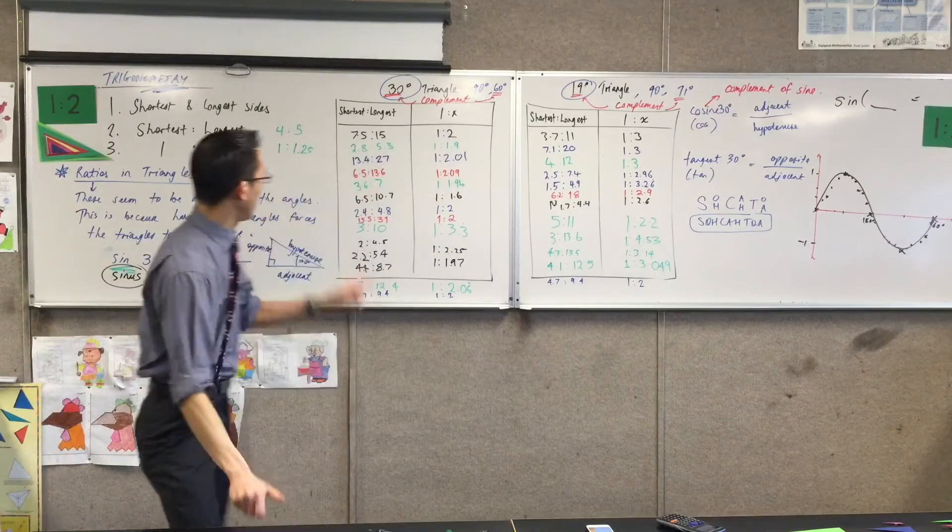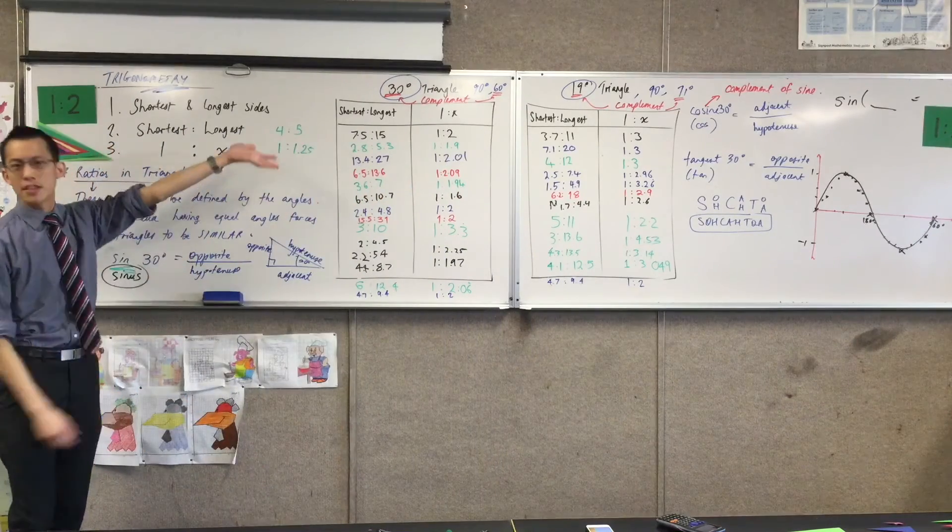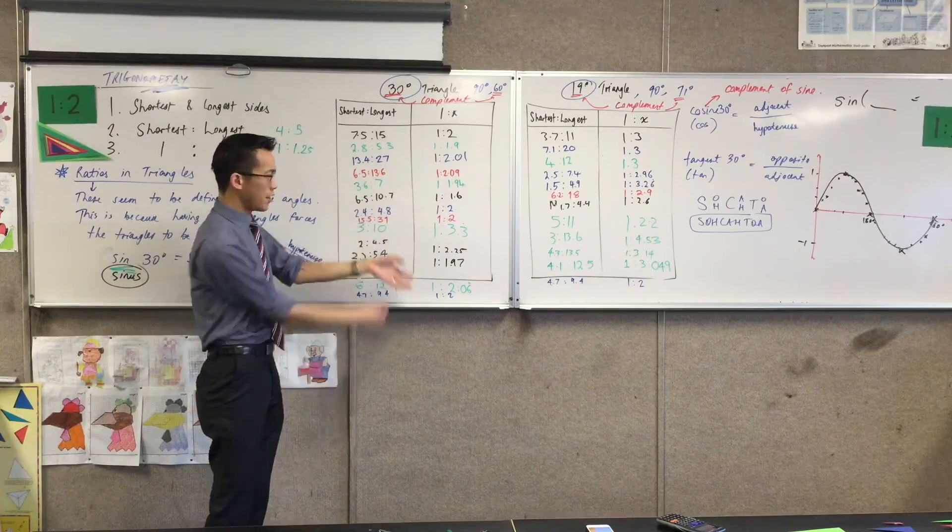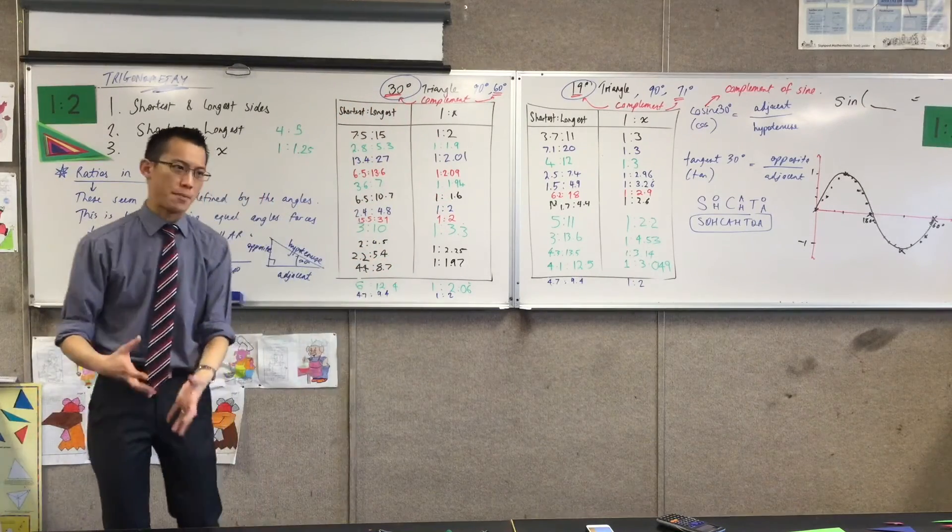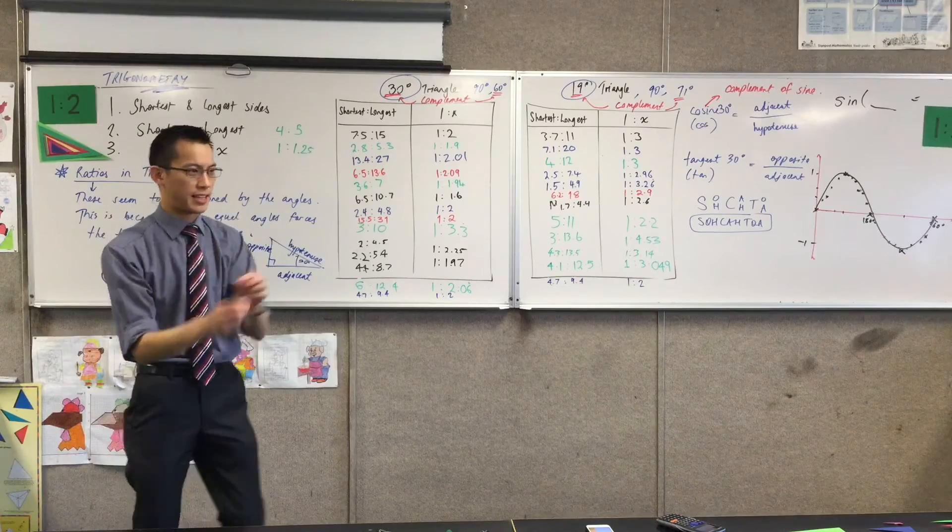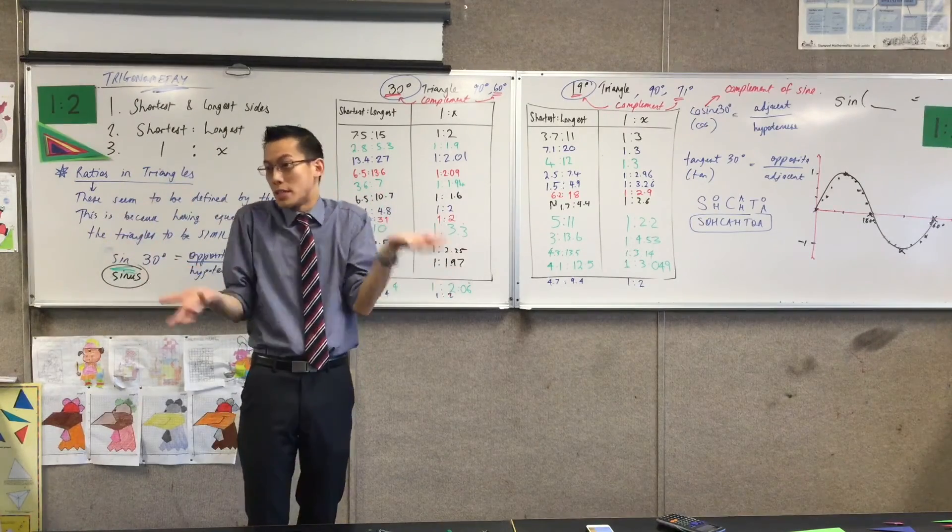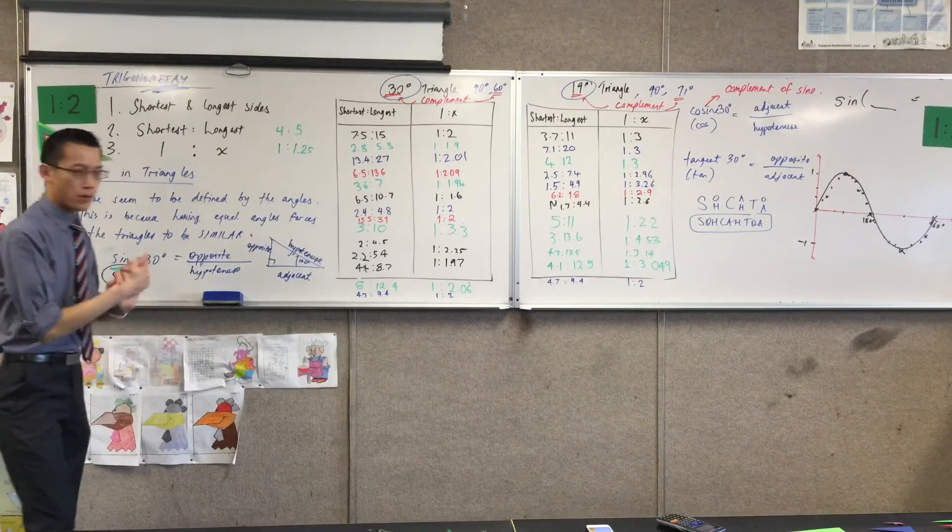Now, remember, we had a look over here. We said, sine 30, sine 30 degrees rather, it's always 1 over 2, 1 over 2, 1 over 2. There are differences here, but all these discrepancies are discrepancies of measurement. Like as in, I couldn't quite get the angle perfectly, or when I measured out my ruler has limited accuracy and so on.